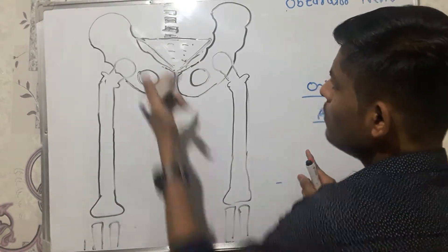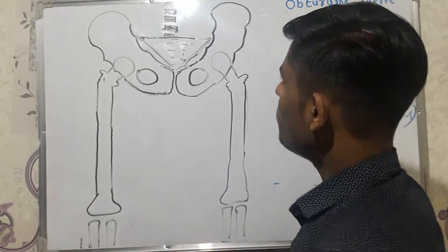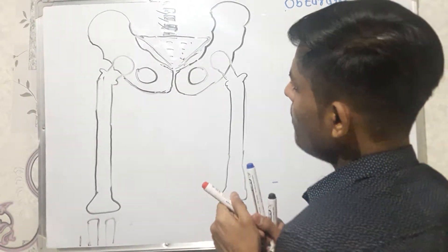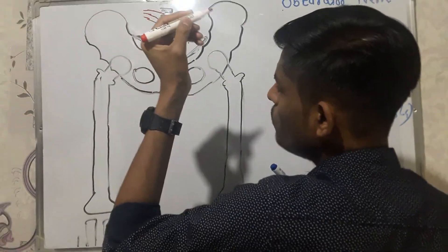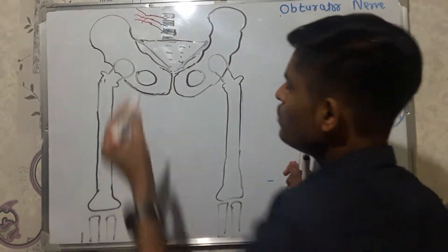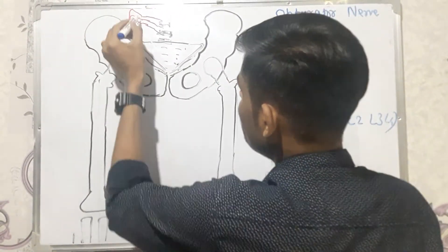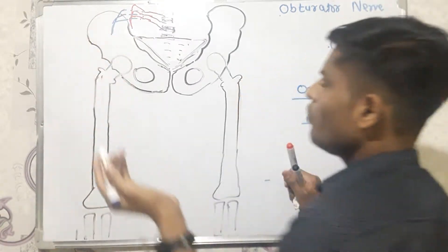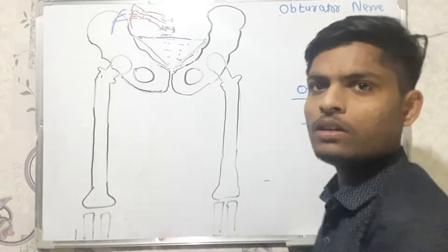In a typical diagram with L1 through L5 and the sacrum, spinal nerves L2, L3, and L4 each give anterior and posterior divisions. The anterior divisions of L2, L3, L4 join together to form the obturator nerve. The posterior divisions of L2, L3, L4 join together to form the femoral nerve, which is the chief nerve for the anterior compartment. The obturator nerve supplies structures in the middle compartment.